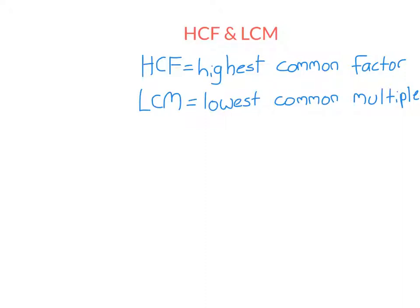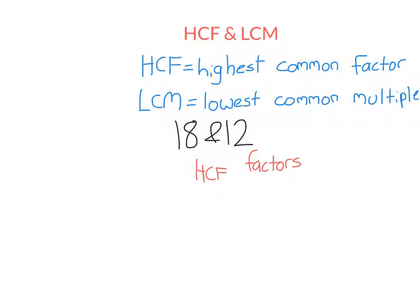Let's start by doing an example. We're going to find the highest common factor and lowest common multiple of 18 and 12. Starting with the highest common factor — an easy way to do this is to list the factors of both numbers. Let's start by listing the factors of 18; remember they come in pairs. So we have 1 and 18, and 2 times 9.